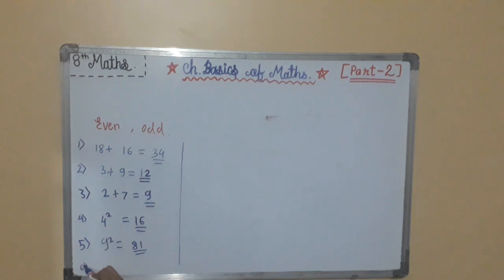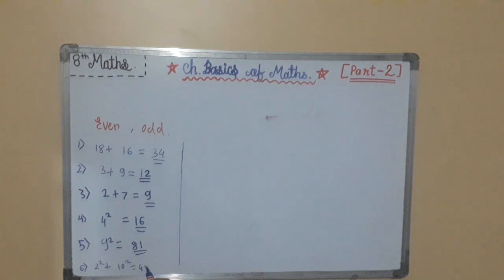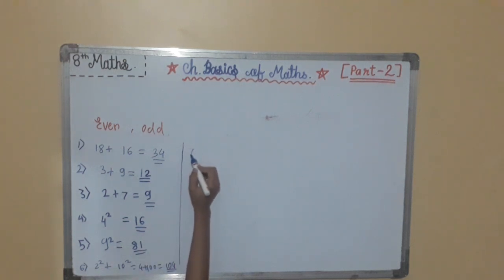Property 6: the sum of squares of two even numbers is even. For example, 2 squared plus 10 squared equals 4 plus 100, which is 104, and that is an even number. Property 7: the sum of squares of two odd numbers is even.